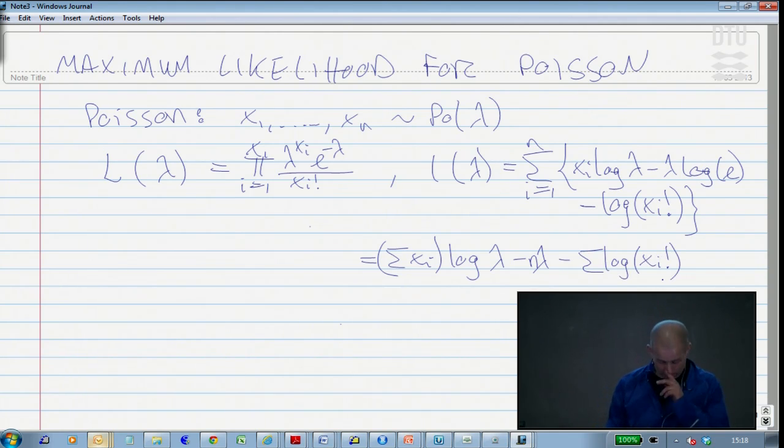Now we have something that we can easily maximize. If we want to find the maximum likelihood estimate of lambda, we should go for the derivative of the log likelihood function. That becomes quite easy in this case. If we look at this term, that disappears, that's a constant in lambda. This term becomes the constant, which is the sum of xi divided by lambda. The derivative of log lambda is 1 over lambda, and this one simply becomes minus n.